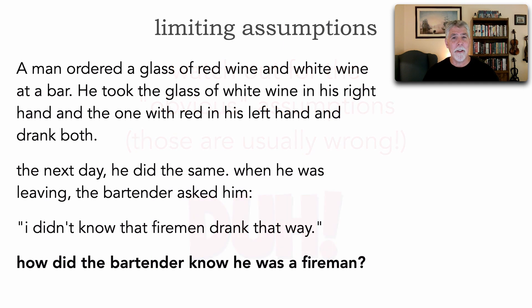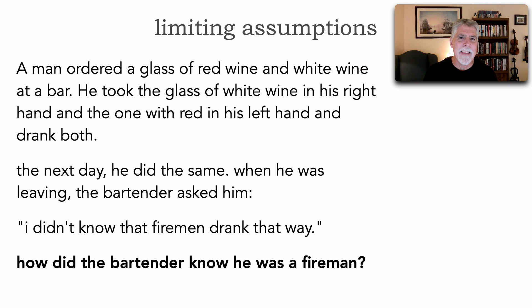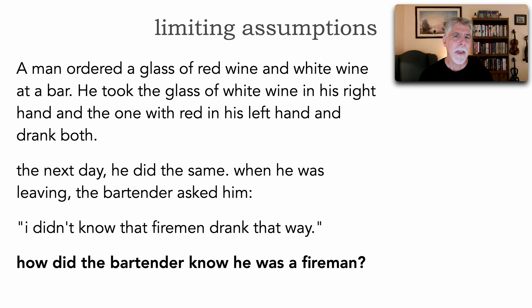Let me show you how to apply limiting assumptions to a problem. Here's a story: a man ordered a glass of red wine and white wine at a bar. He took the white wine in his right hand and the red in his left hand and drank them both. The next day he did the same thing. When he was leaving, the bartender asked him, 'I didn't know firemen drink that way.' How did the bartender know he was a fireman? Pause the video, think about it for a couple minutes, and form your assumptions.